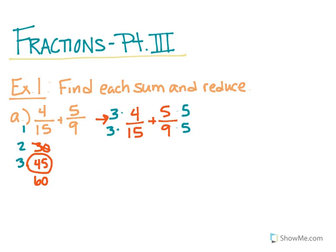We're going to go through this process and grab our new fraction. 3 times 4 is 12, 3 times 15 is 45. The plus stays the same. 5 times 5 gives us 25, and 9 times 5 gives us 45. Now that we have common denominators, we're just going to add the numerators together and leave the denominator alone. So 12 and 25 is 37 over 45.